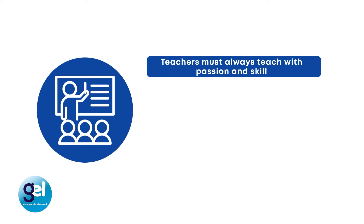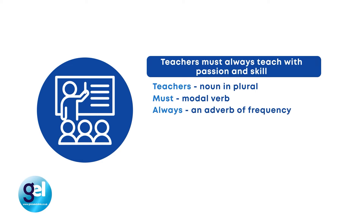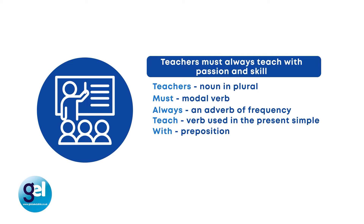Let's look at a further example: 'Teachers must always teach with passion and skill.' Reflect on this sentence — do you know the name of each word? 'Teachers' is our noun in the plural form. 'Must' is a modal verb, which we'll see more of later. 'Always' is an adverb of frequency. 'Teach' is the verb in the present simple. 'With' is a preposition. 'Passion' is a noun. 'And' is a conjunction, and 'skill' is a noun.